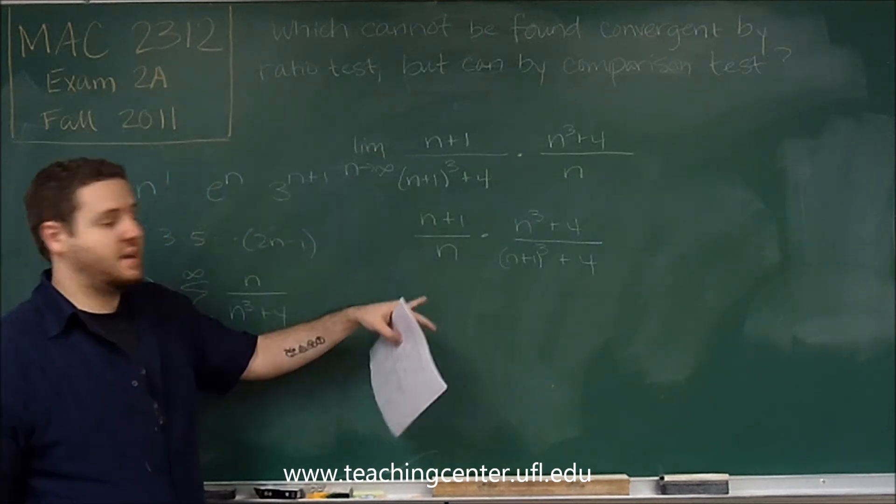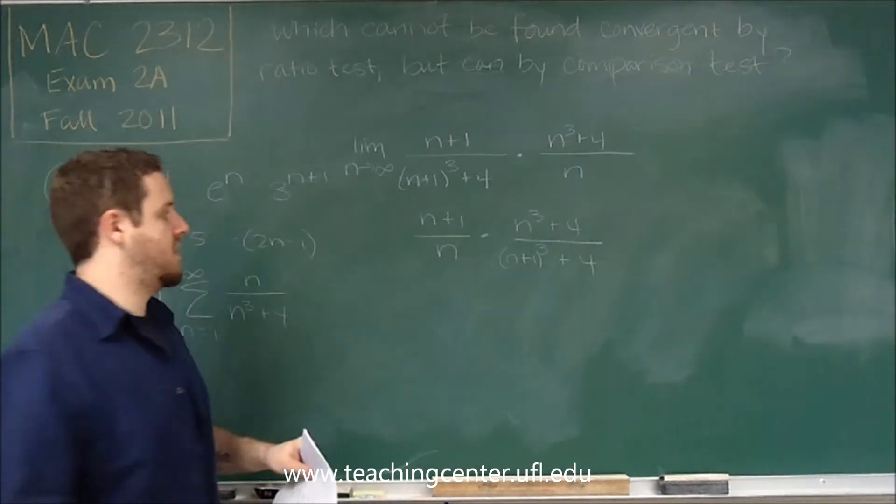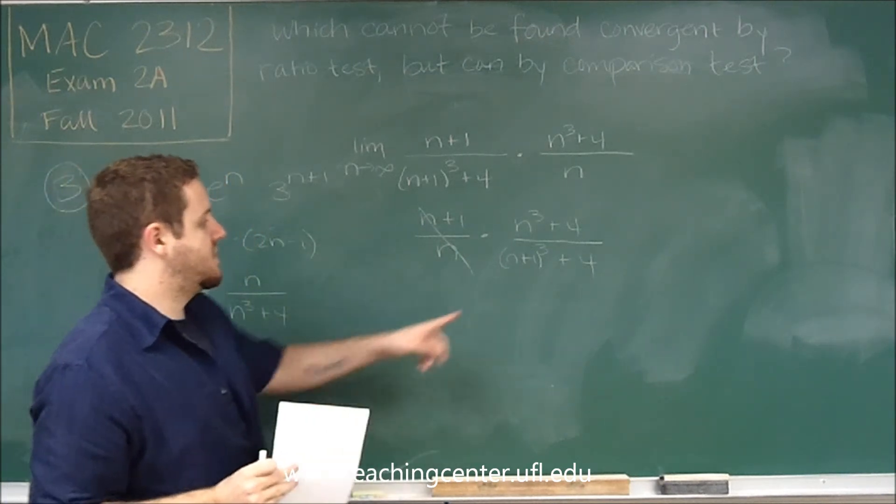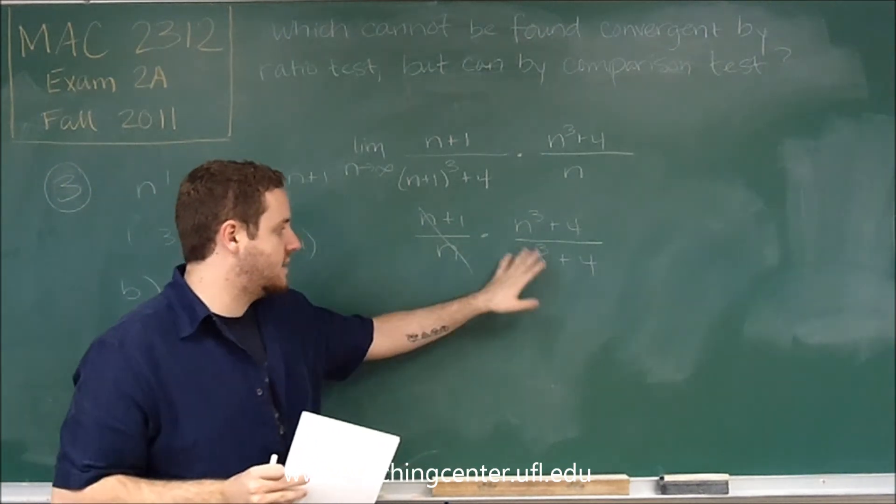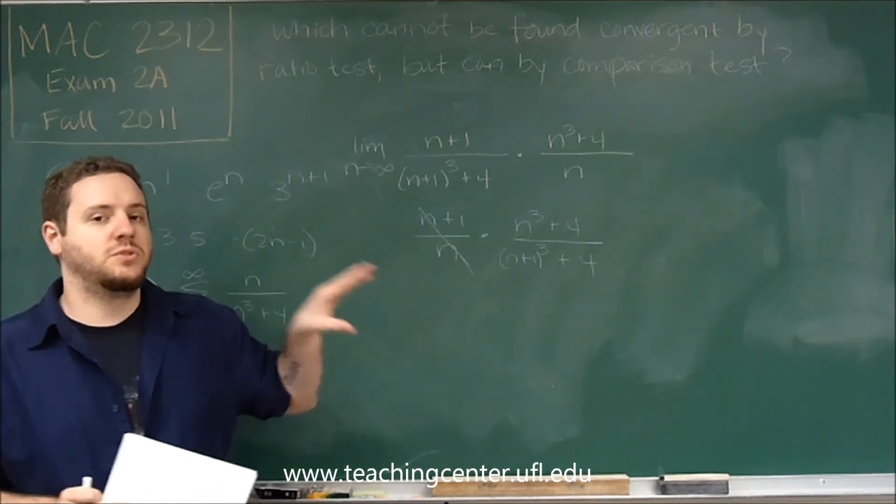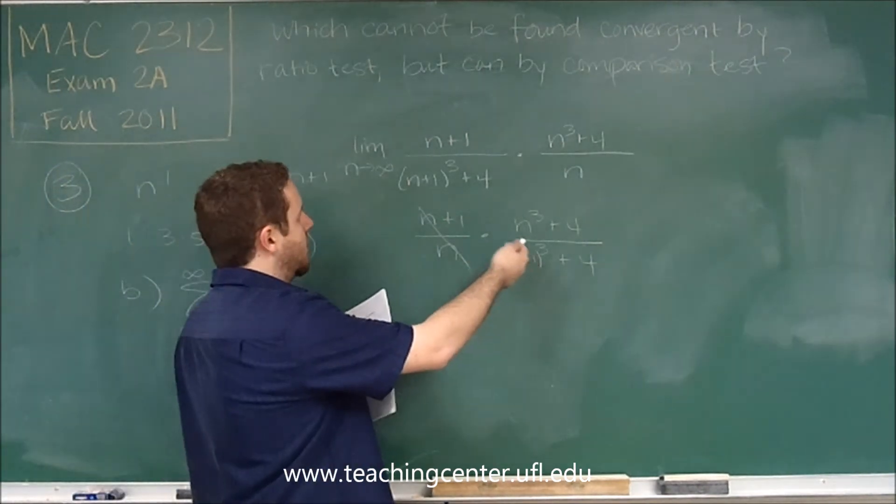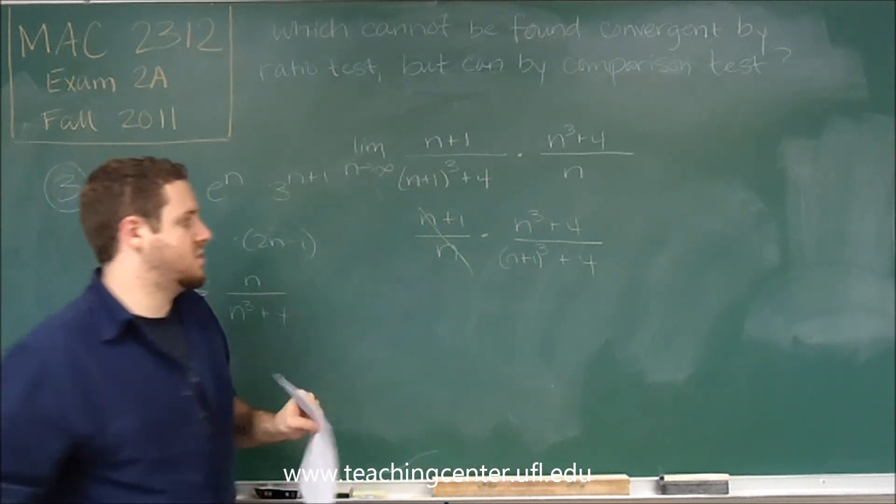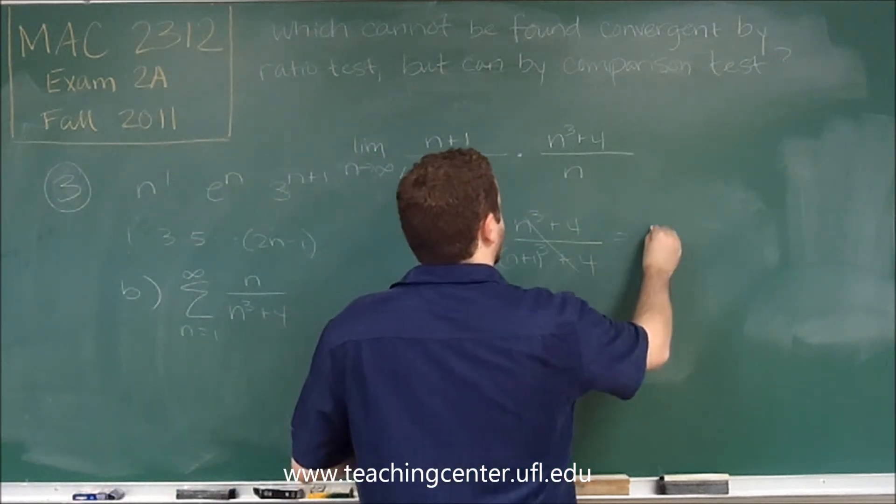As n goes to infinity, n plus 1 and n are the same thing. This is going to be 1. And for the same reason here, if you were to factor or expand this out, the leading degree term would just be n cubed, you have an n cubed here. So the limit as n goes to infinity, this would just be 1. This is all just equal to 1.